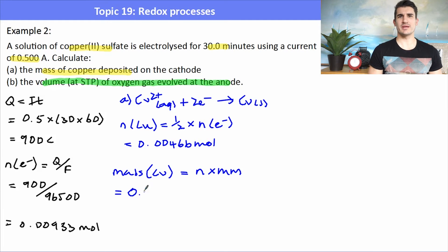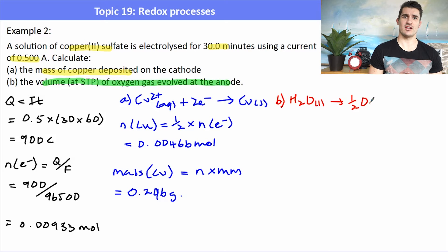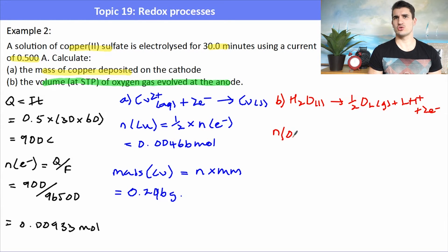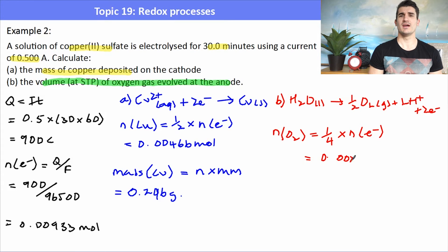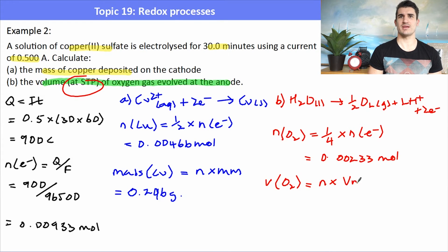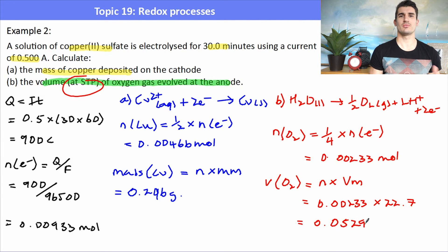Part (b): calculate the volume at STP of oxygen gas evolved at the anode. Write the equation for water breaking down: 2H₂O → O₂ + 4H⁺ + 4e⁻. The ratio of O₂ to electrons is 1:4, so moles of O₂ = ¼ × moles of electrons. To calculate the volume at STP, use moles × molar volume, where the molar volume at STP is 22.7 dm³ mol⁻¹, giving 0.0529 dm³. To convert to cm³, multiply by 1000.